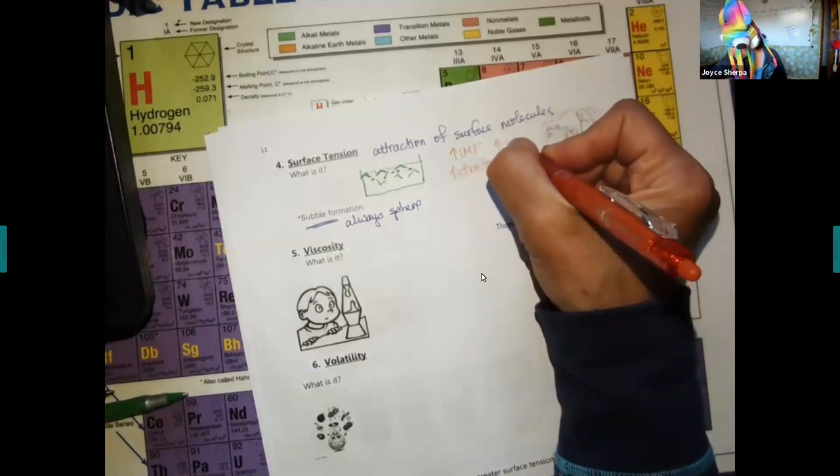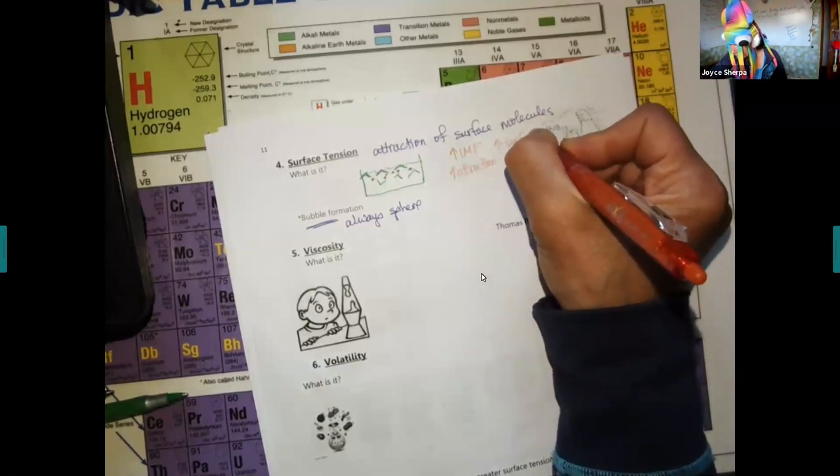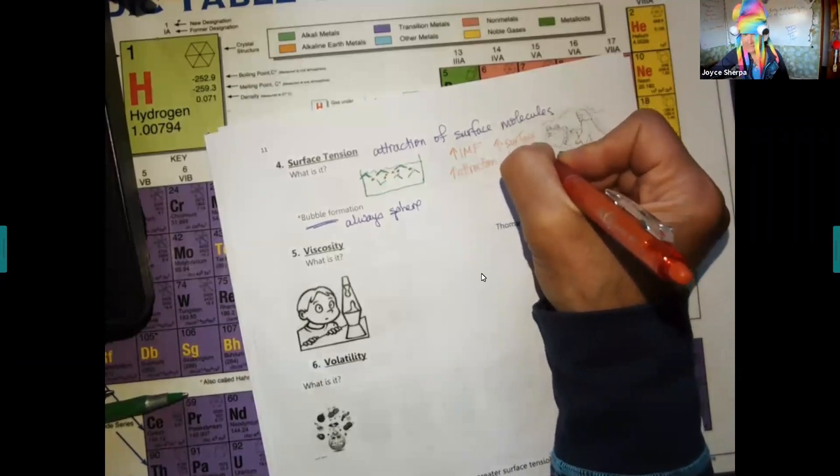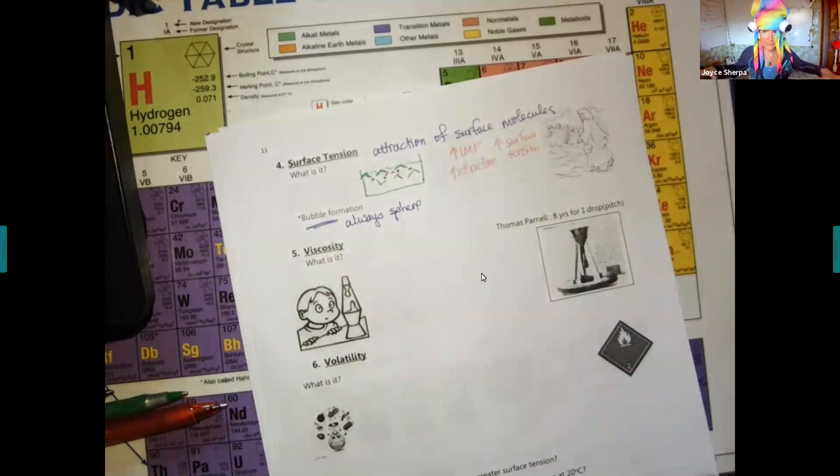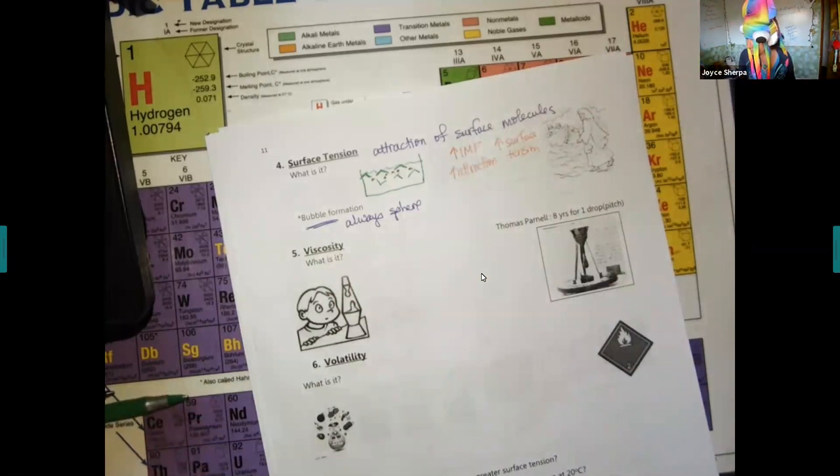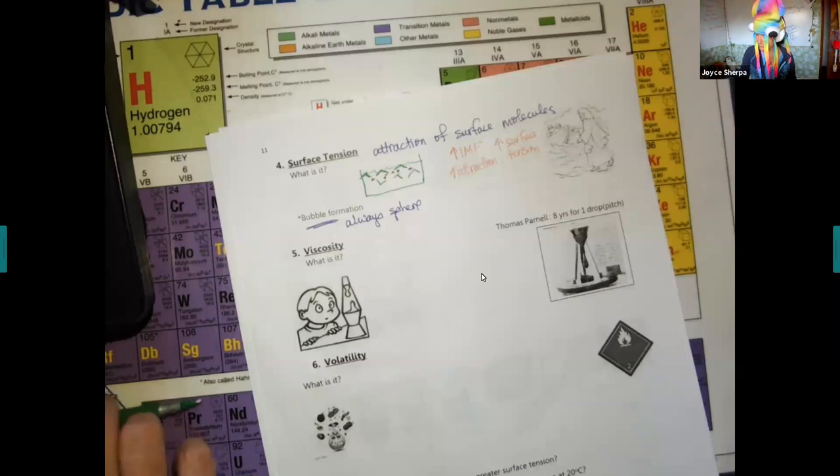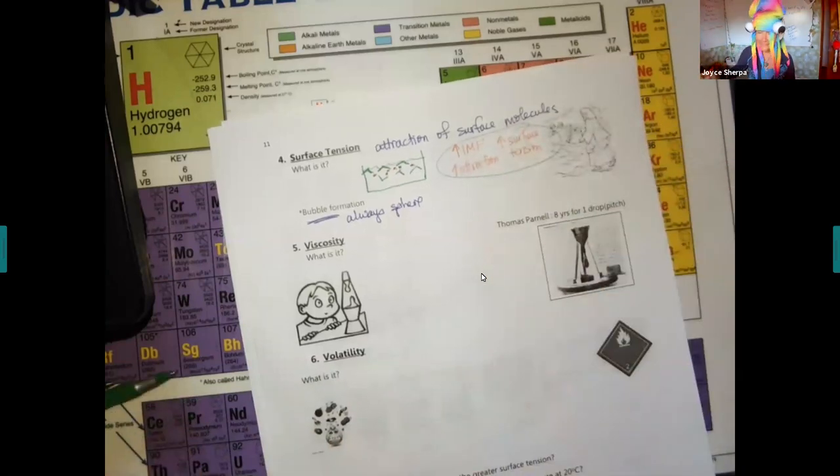As you increase the IMF, you're going to increase the attraction. You're going to increase the surface tension. Water, because of those H bonds. Those water bugs that walk on water, they do it because their surface area is really spread out. They have really, somebody said if we had arms and legs that were 12 feet long, we could do this no problem. Stronger IMF, stronger attraction.